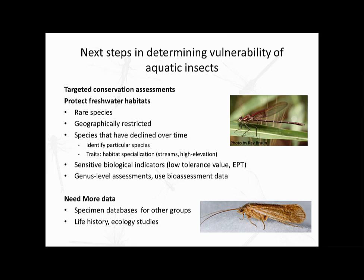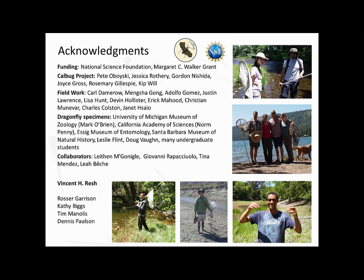One of the things I hope we're able to do is improve specimen databases to include other sensitive aquatic insects such as EPT, drawing on historical data from museum collections. In addition, we need more information on the life history and ecology of some of these species, which informs how we protect their habitats. With that, I'd like to acknowledge funding sources and everyone who helped with the project, and invite any questions.